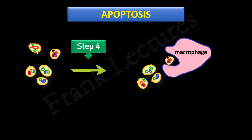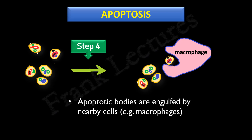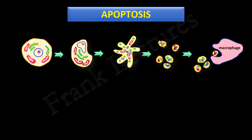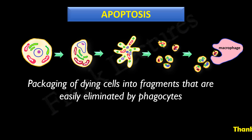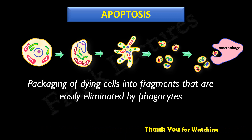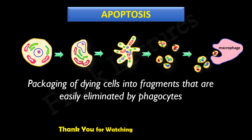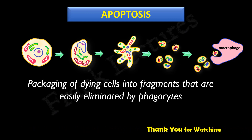These apoptotic bodies are engulfed by nearby cells such as macrophages via phagocytosis. So, in this video lecture, we understood that the process of apoptosis involves the packaging of dying cells into fragments that are easily eliminated by phagocytes. This whole process ensures that the normal function of surrounding tissues is not disturbed.